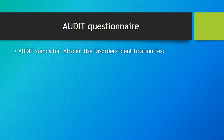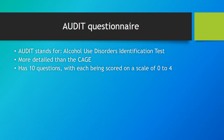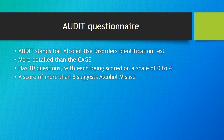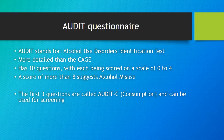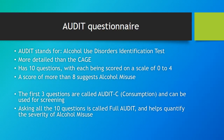AUDIT stands for Alcohol Use Disorders Identification Test. This is more detailed than the CAGE. There are 10 questions, each scored on a scale of 0 to 4, so the maximum score is 40. A score of more than 8 suggests alcohol misuse. The first three questions — called AUDIT-C — relate to actual consumption and can be used for screening. Asking all 10 questions is called the full AUDIT and helps quantify the severity of alcohol misuse.